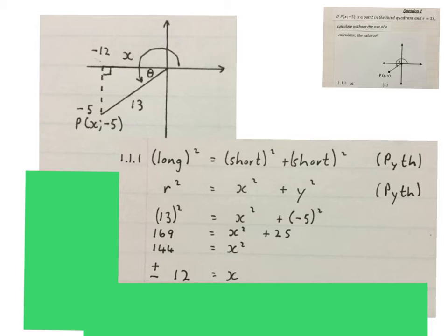So x equals plus or minus 12. You must always remember to write this plus or minus 12, and then decide which one or both we're going to use. And then we use x = -12, because we are on this side where x is negative.